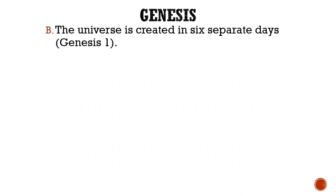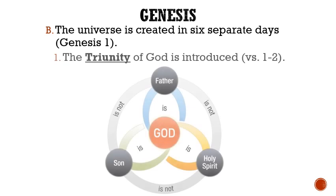Now that we've looked at the different theories of the meaning of the word day, let's jump into the actual text of Genesis 1, letter B: the universe is created in six separate days. Number one: the triunity of God is introduced. Genesis 1, verse 1 says, 'In the beginning God created the heavens and the earth.' The word God in Hebrew is the plural Elohim, but created is in the singular. This demonstrates God's unity or triunity.